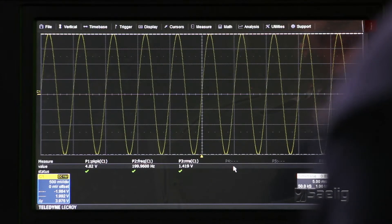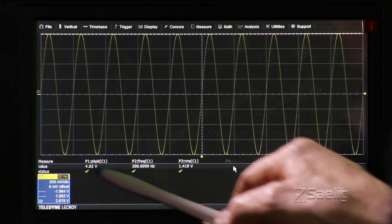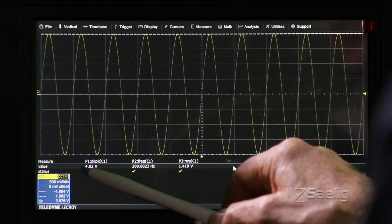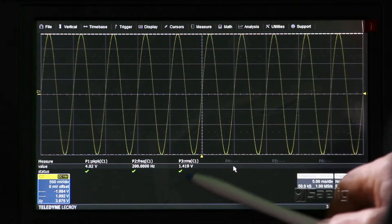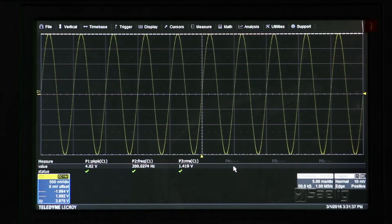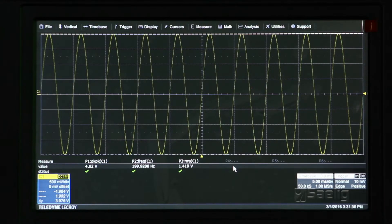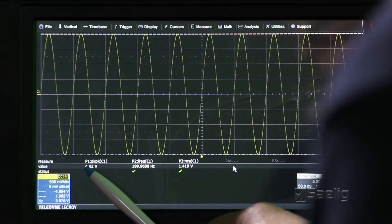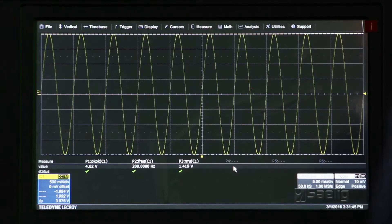What's more helpful is possibly the automatic measurements, which are shown along the bottom here. I've got volts peak to peak, I've got frequency and I've got RMS voltage here. So let's take a look at what these are showing. Our peak to peak measurement is showing 4.02 volts, which isn't too bad.